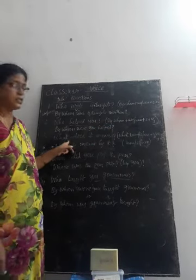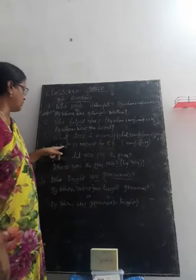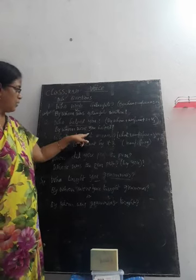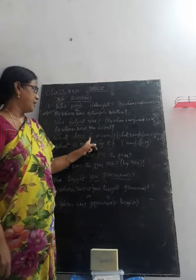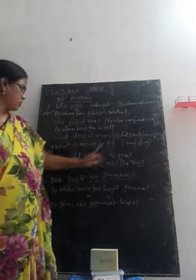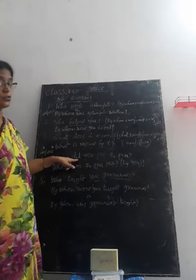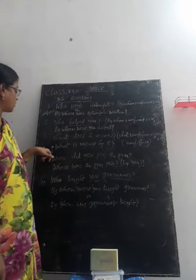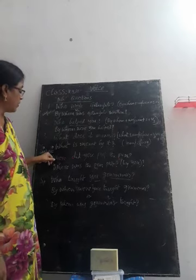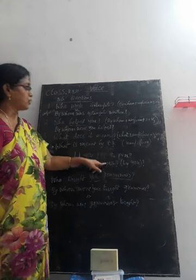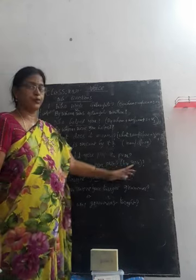What does it mean? The question is in present tense, so we use present tense B forms. Among the three, we select IS. The questioning word is WHAT. MEAN, MEANT, MEANT — V3 is MEANT. By preposition and IT. What is meant by it? Where did you put the pen? WHERE is the questioning word, past tense. We select past tense B form WAS — the pen is singular. WHERE WAS THE PEN? Put, put, put — V3 is also put. Where was the pen put? By you. Question mark.